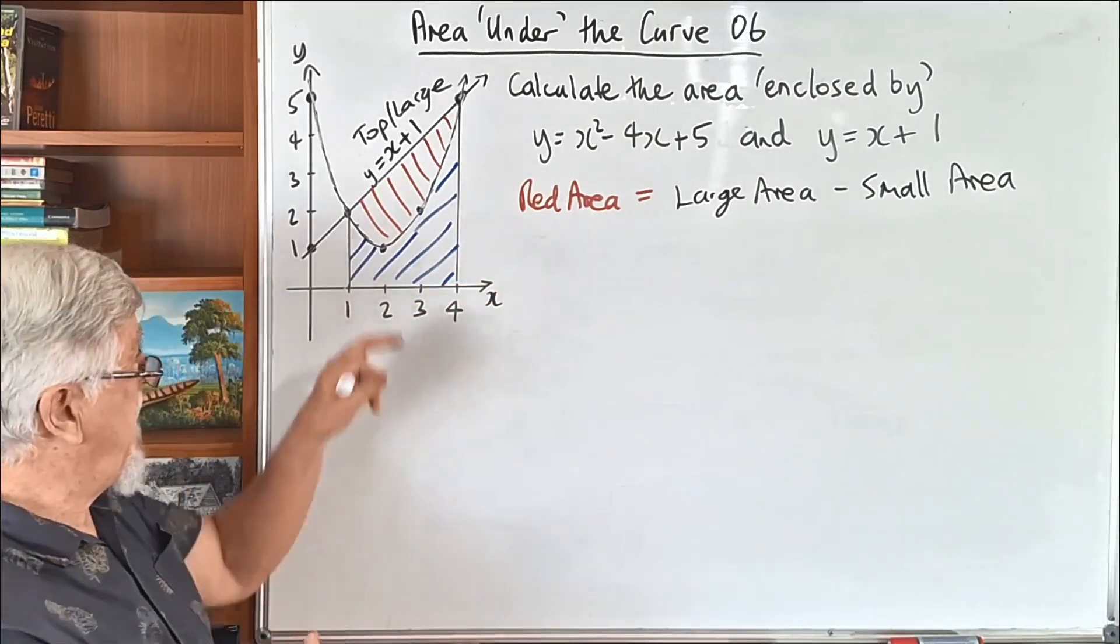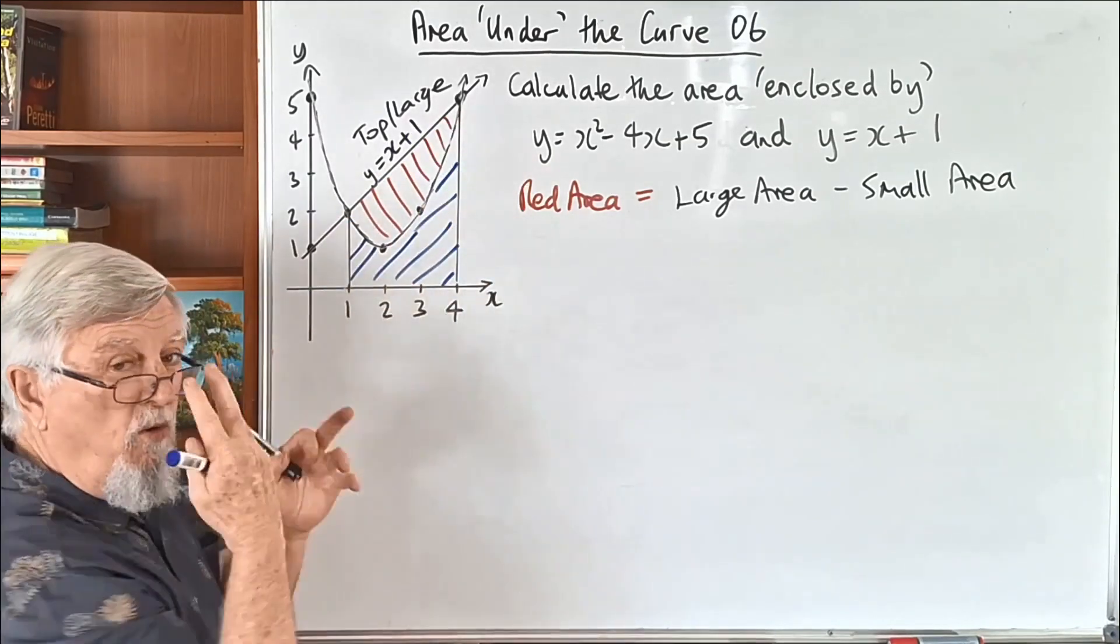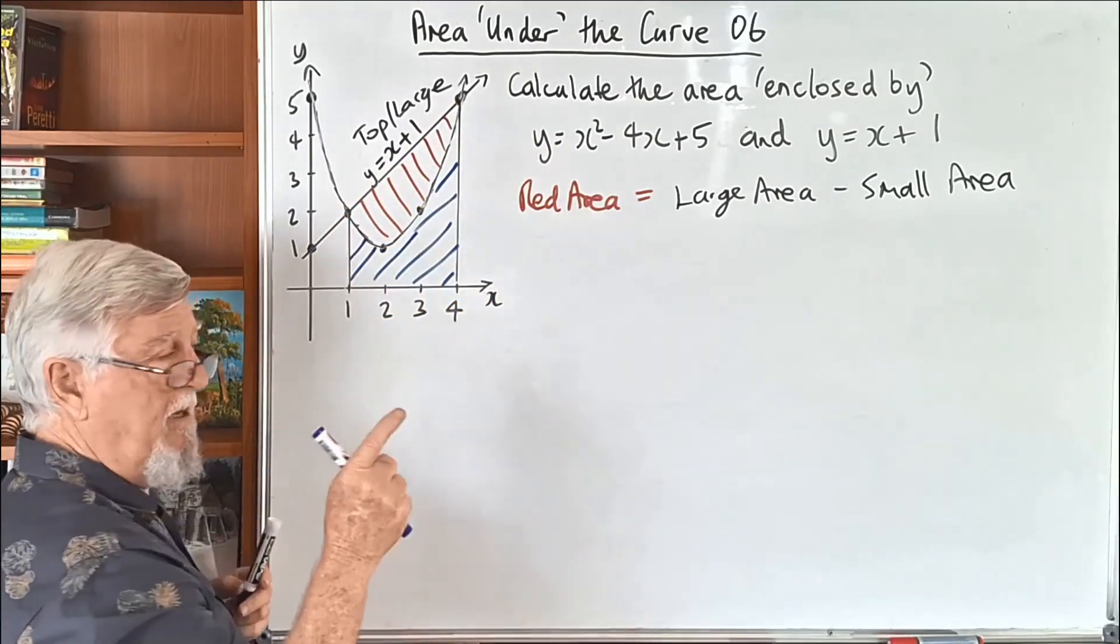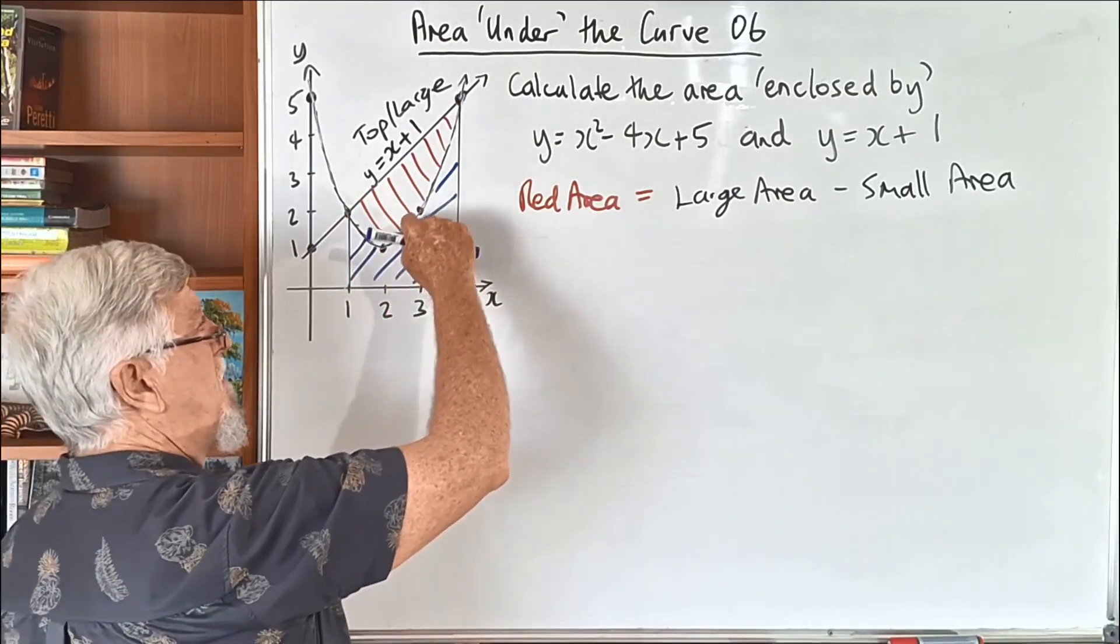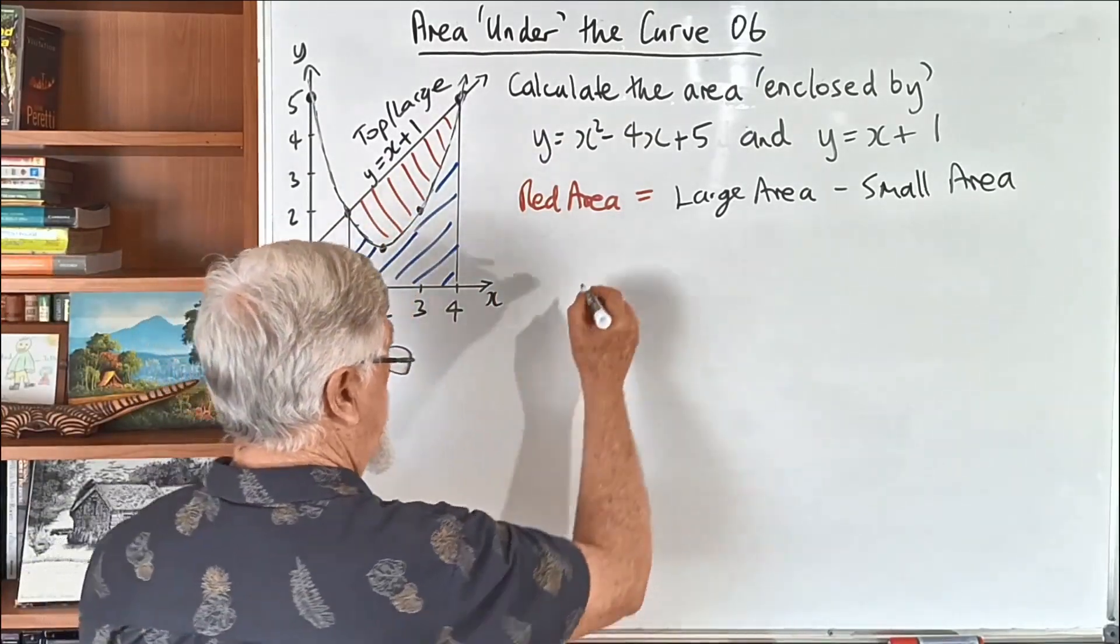The large area is all the way for the whole of that trapezium. I could colour other colours, but I'm not going to at the moment. So the large area is all the way from the straight line down to the x-axis. And the small area, I'm going to colour in blue and try to make it more obvious. So if we want that red area, all we're going to do is get the large area and subtract the blue area.